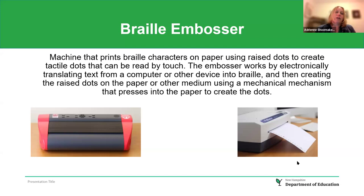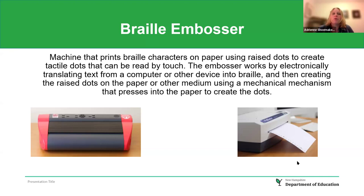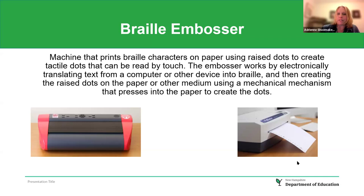Braille embossers are machines that print Braille characters onto paper using raised dots to create tactile content that can be read by touch. The embosser electronically translates text from a computer or other device into Braille, using a mechanical mechanism that presses into the paper. On this slide there is an embosser for text and also the Tactile Pics Blaster.